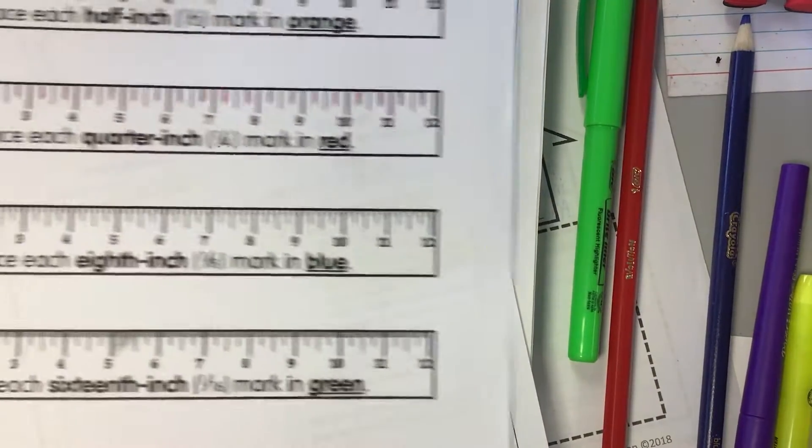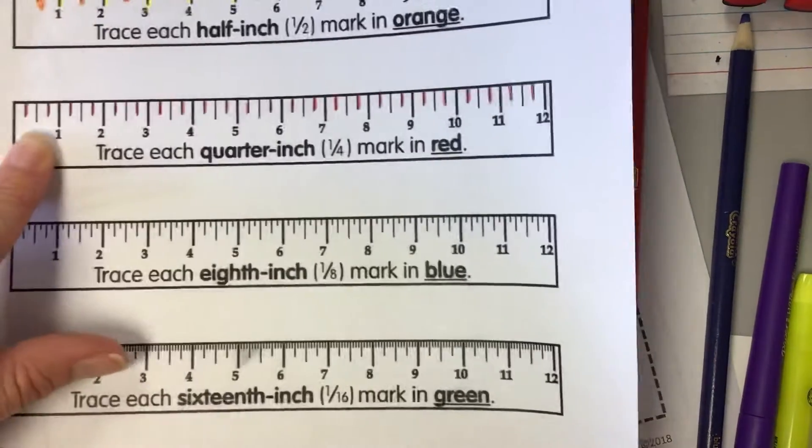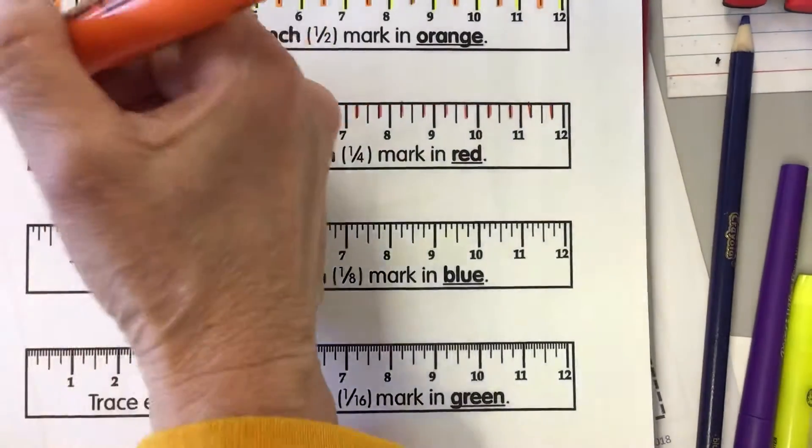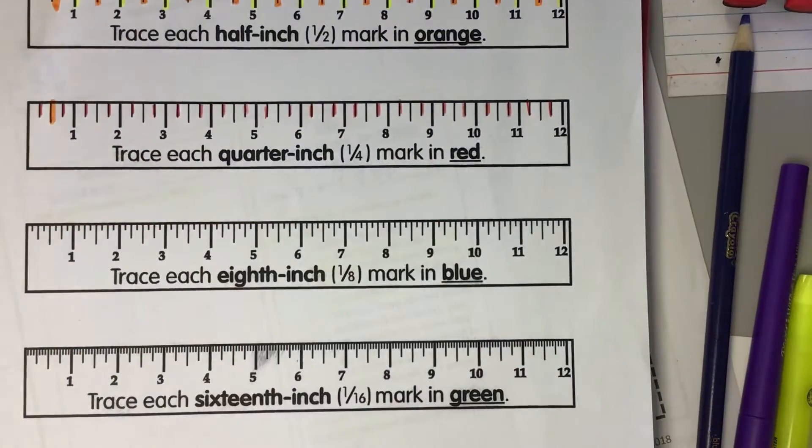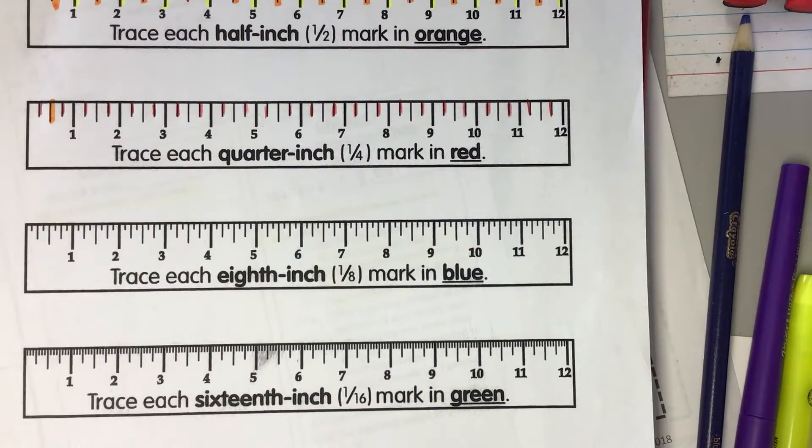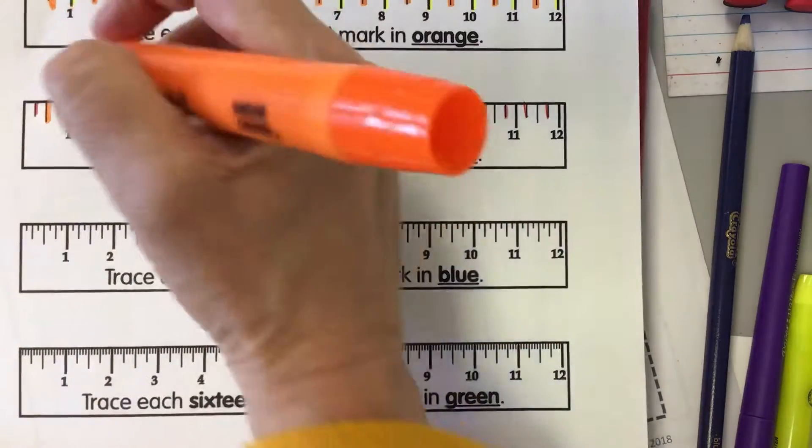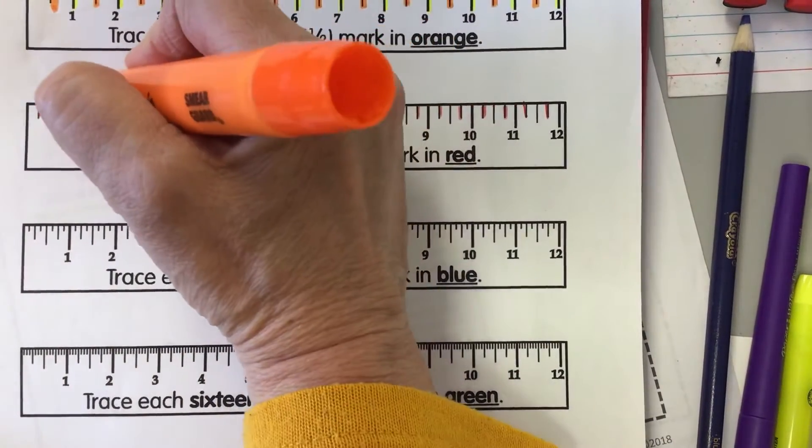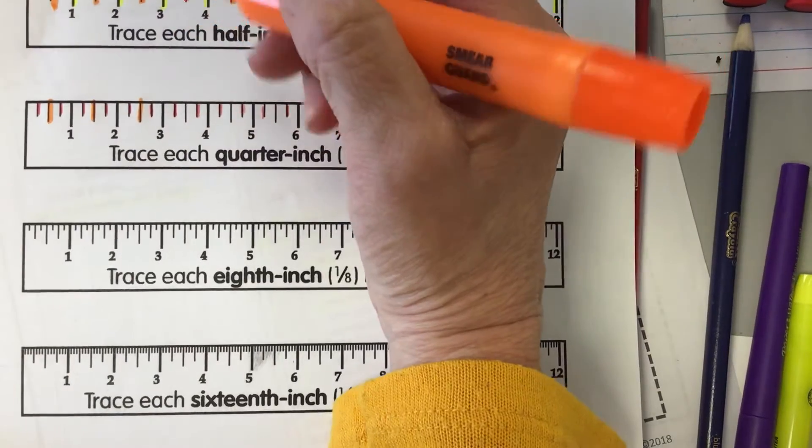Okay, now what I want to show you is that the one half inch line is longer than the one-fourth inch line. Does anyone know why? Why would the one-half inch line be longer than the one-fourth inch line? Harper? That's true. What else? Anyone else have a thought about that?